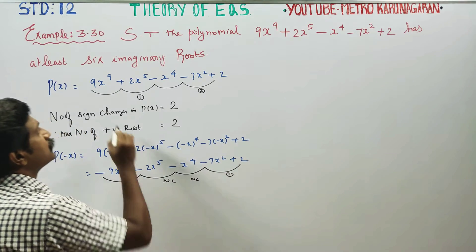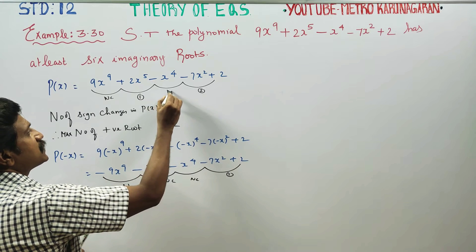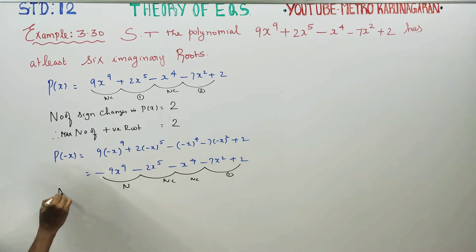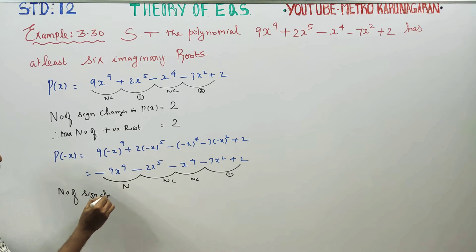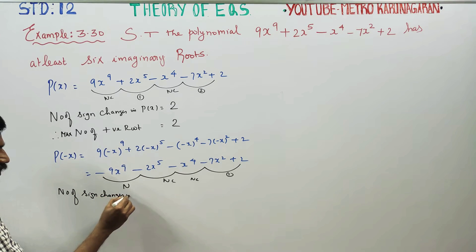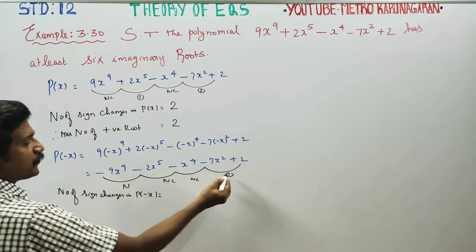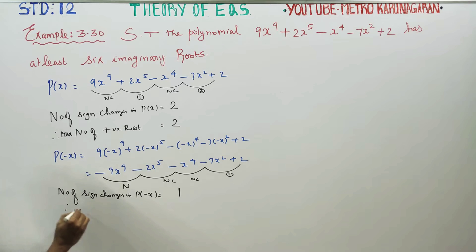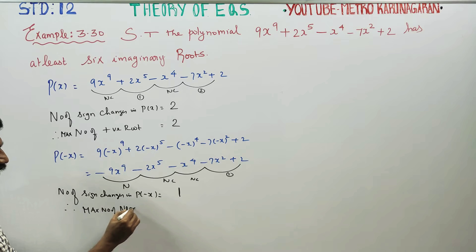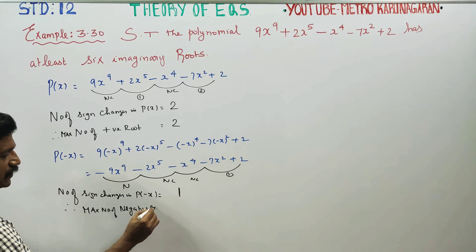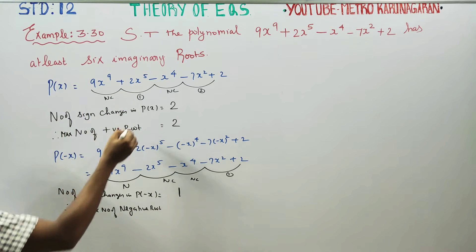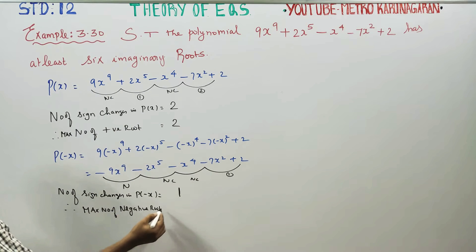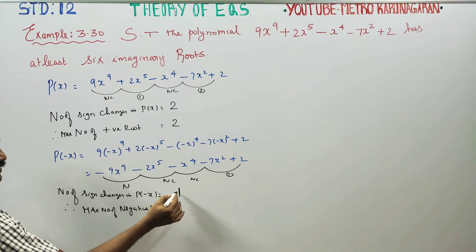No change, no change, no change — then one sign change. The number of sign changes in p(-x) is 1. Since substituting -x gives negative roots, the maximum number of negative roots is equal to 1.